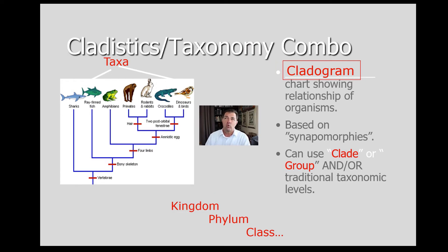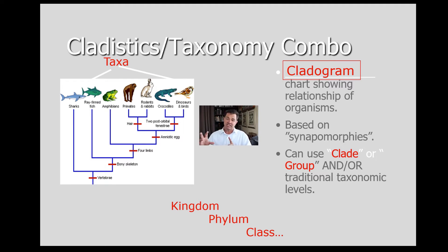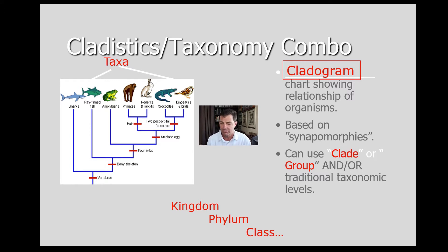Since then, there's a group of scientists that work on what they call cladistics — a combination of cladistics and taxonomy. They form diagrams or charts based on similarities and differences, which we call synapomorphies. These are shared derived characteristics that certain animals have and others don't. By looking at those, or similarities in DNA, they build charts based on how they think organisms are probably related to one another.